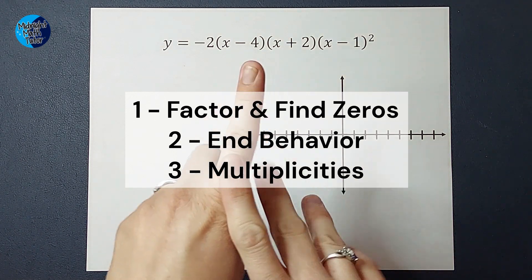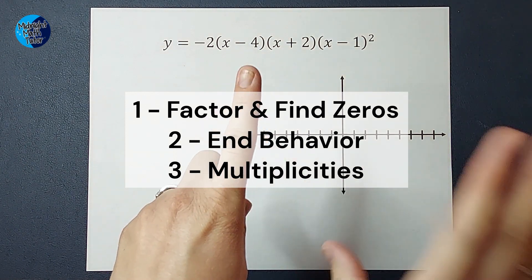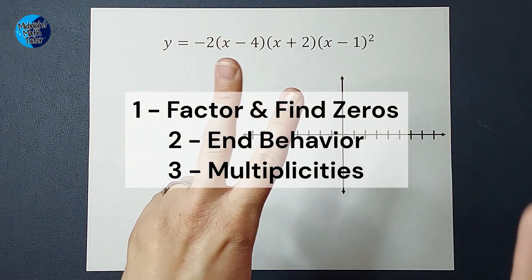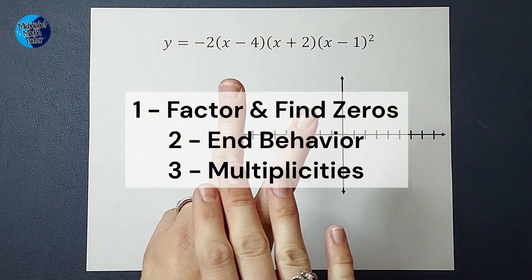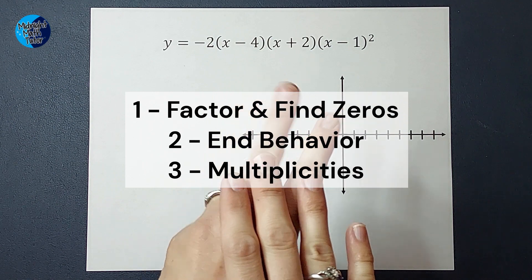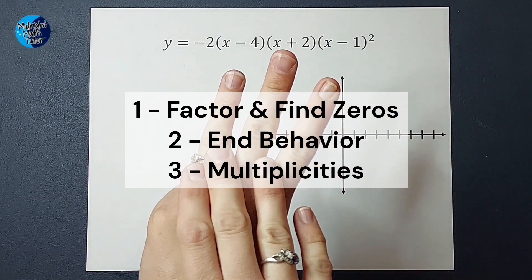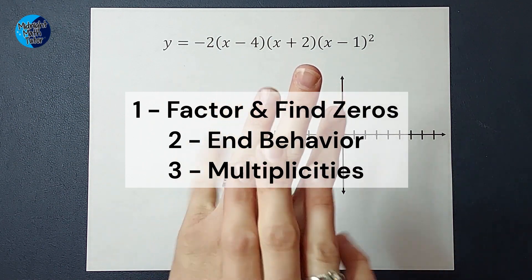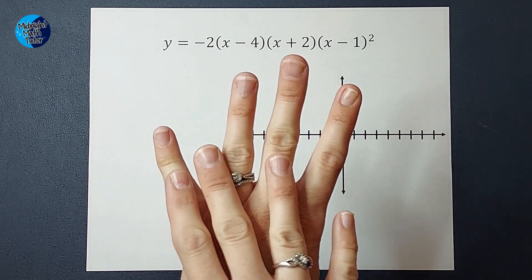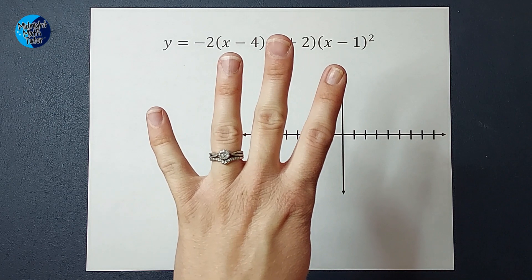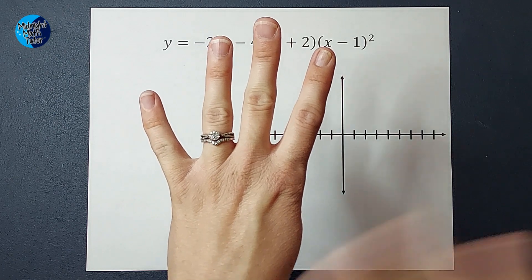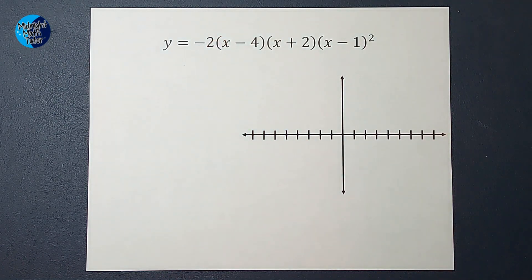First, we're going to factor if needed and find our zeros. Second, we're going to look at end behavior. Third, we're going to look at multiplicities. And fourth is an optional step that we'll talk about when we get there.